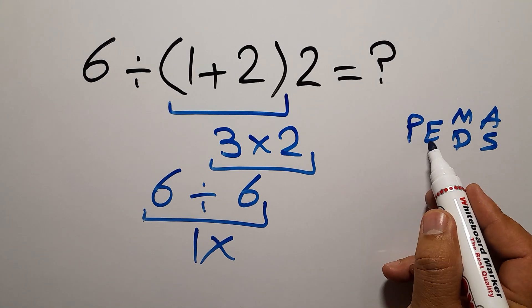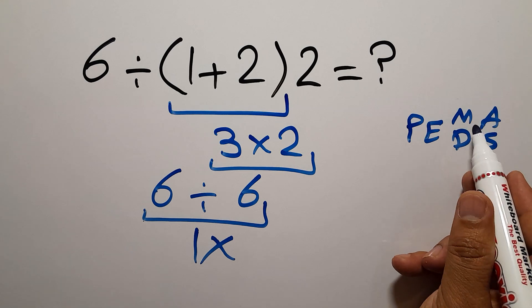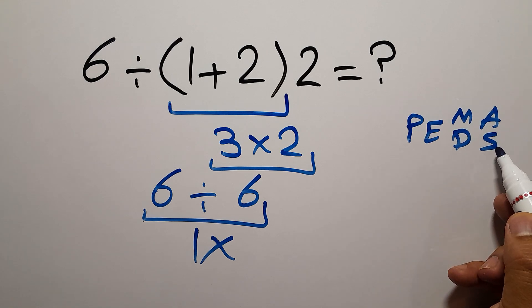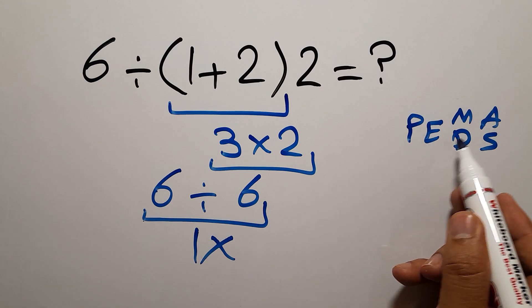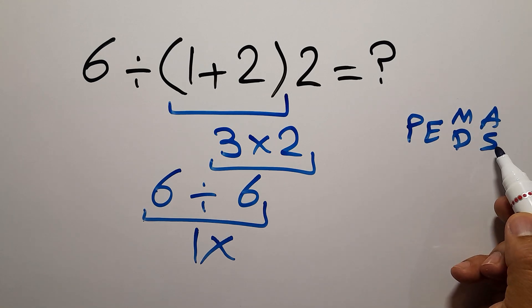P stands for parentheses, E stands for exponents, M and D stands for multiplication and division, and A and S stands for addition and subtraction. First we have to do parentheses, then exponents, then multiplication or division, and finally addition or subtraction.